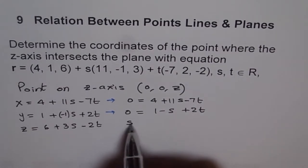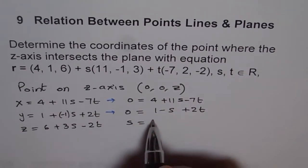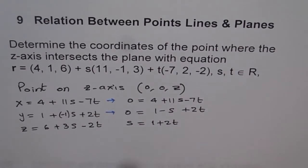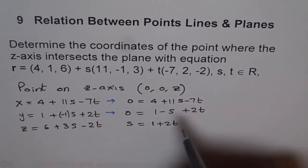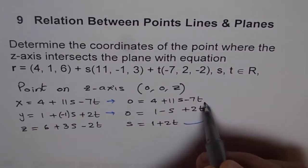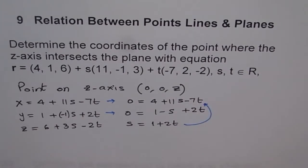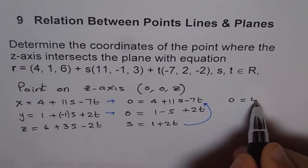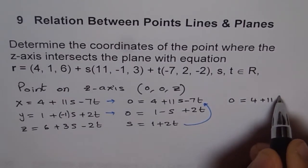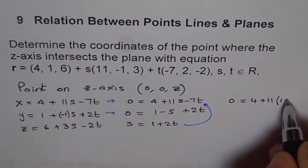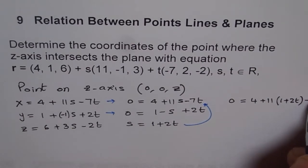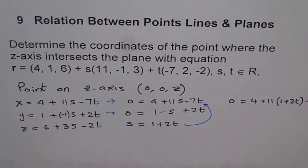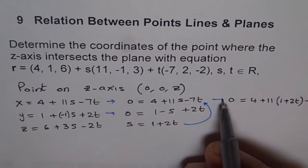s could be written as 1 plus 2t. So we will substitute this value of s in here, in this equation and then move on. So we say 0 equals to 4 plus 11 times (1 plus 2t) minus 7t.